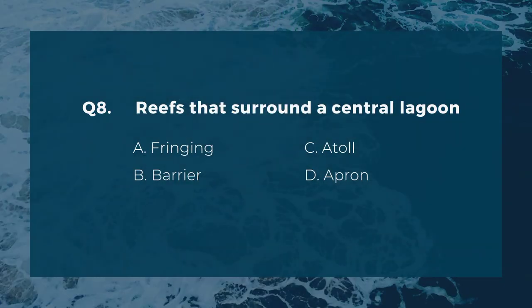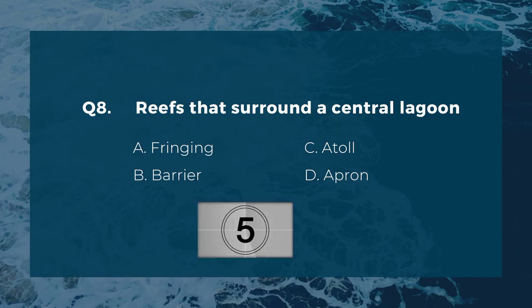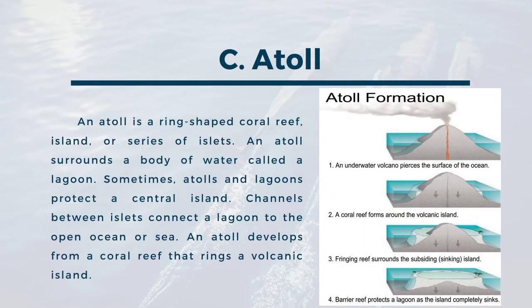Question eight: reefs that surround a central lagoon. A) fringing, B) barrier, C) atoll, D) apron. The correct answer is C, atoll. An atoll is a ring-shaped coral reef, island, or series of islets that surrounds a body of water called a lagoon. Sometimes atolls and lagoons protect a central island; channels between islets connect a lagoon to the open ocean or sea. An atoll develops from a coral reef that rings a volcanic island.